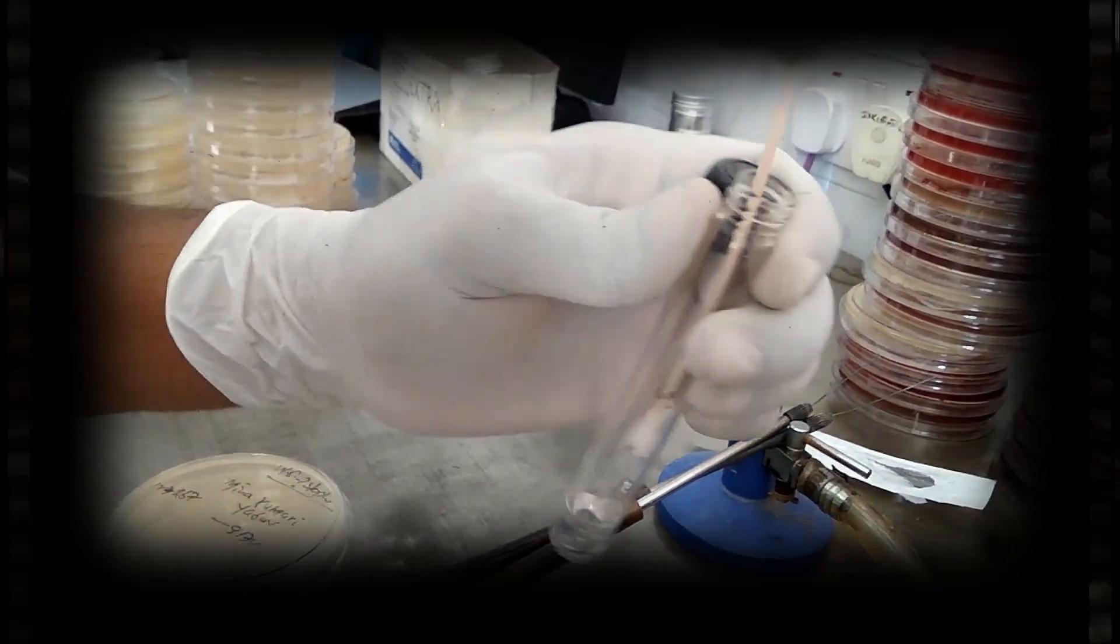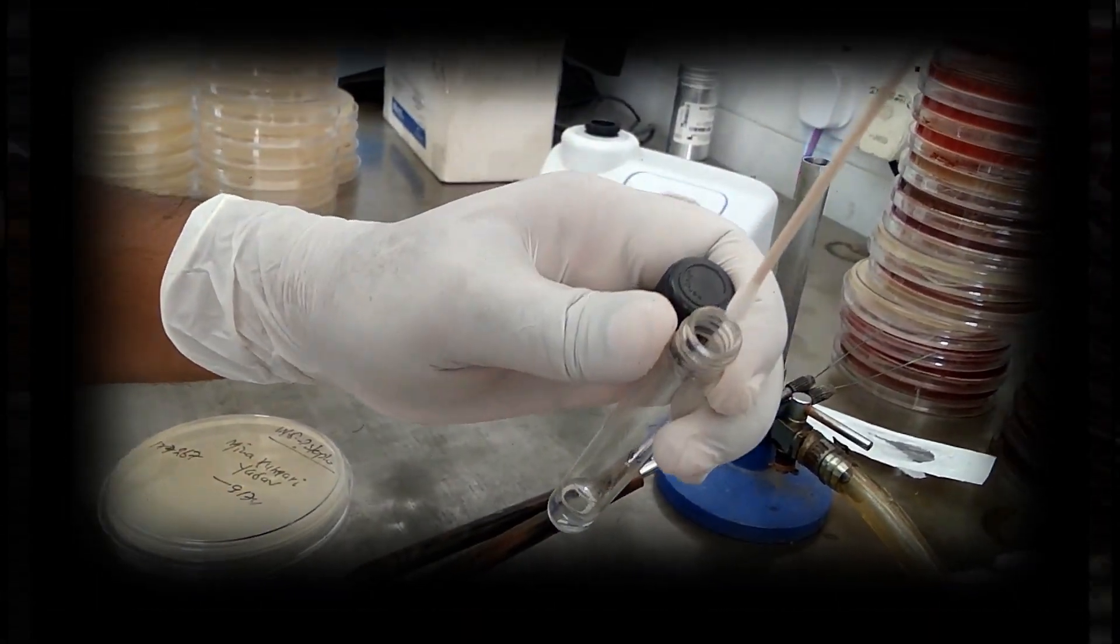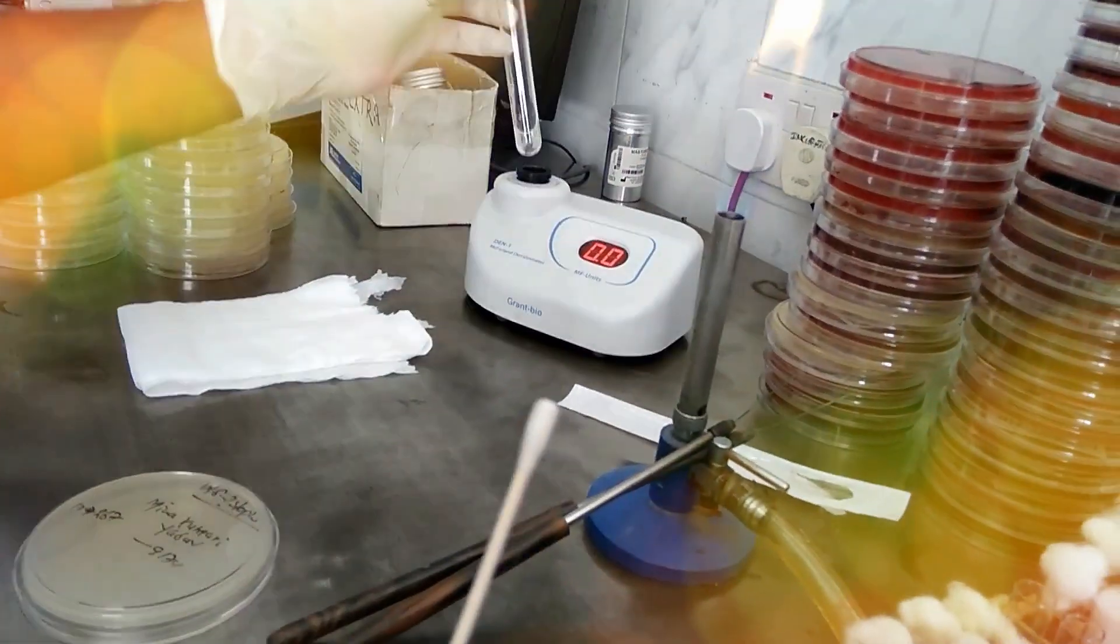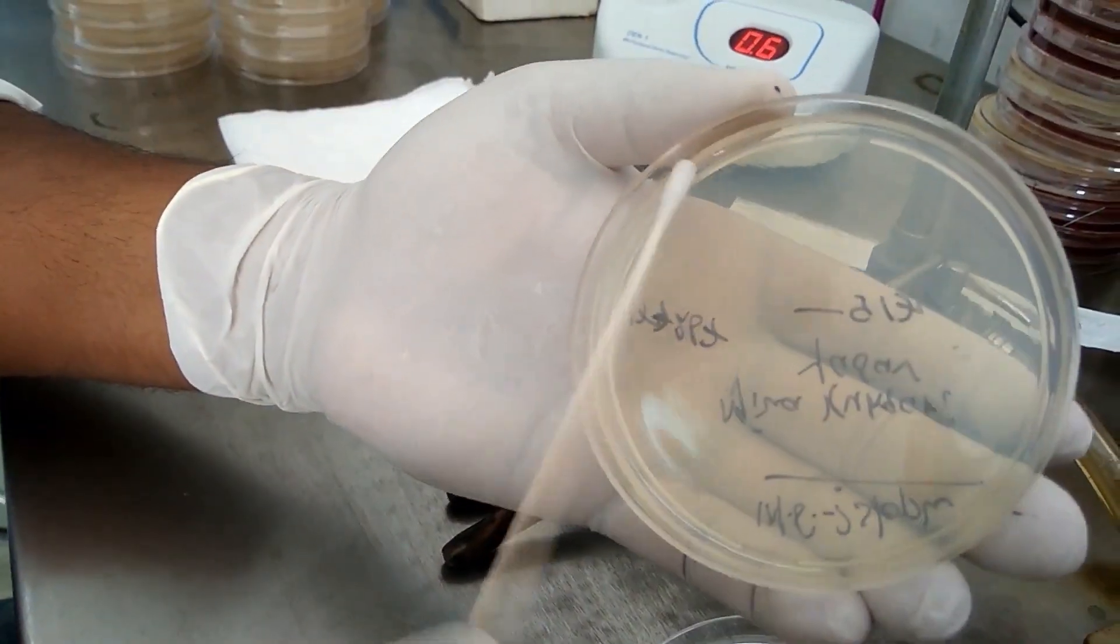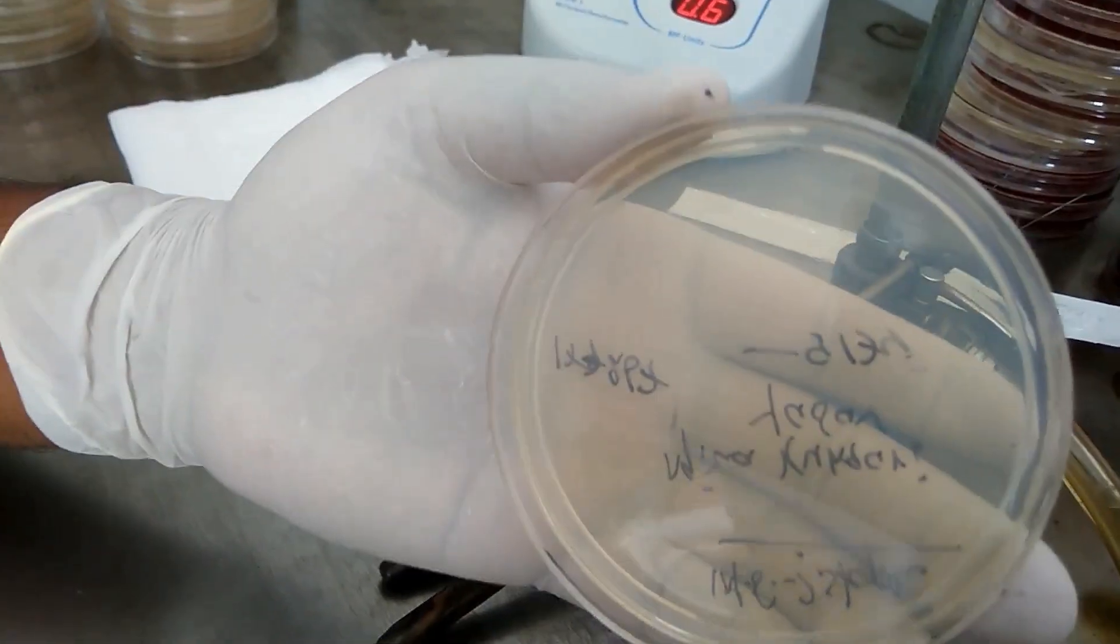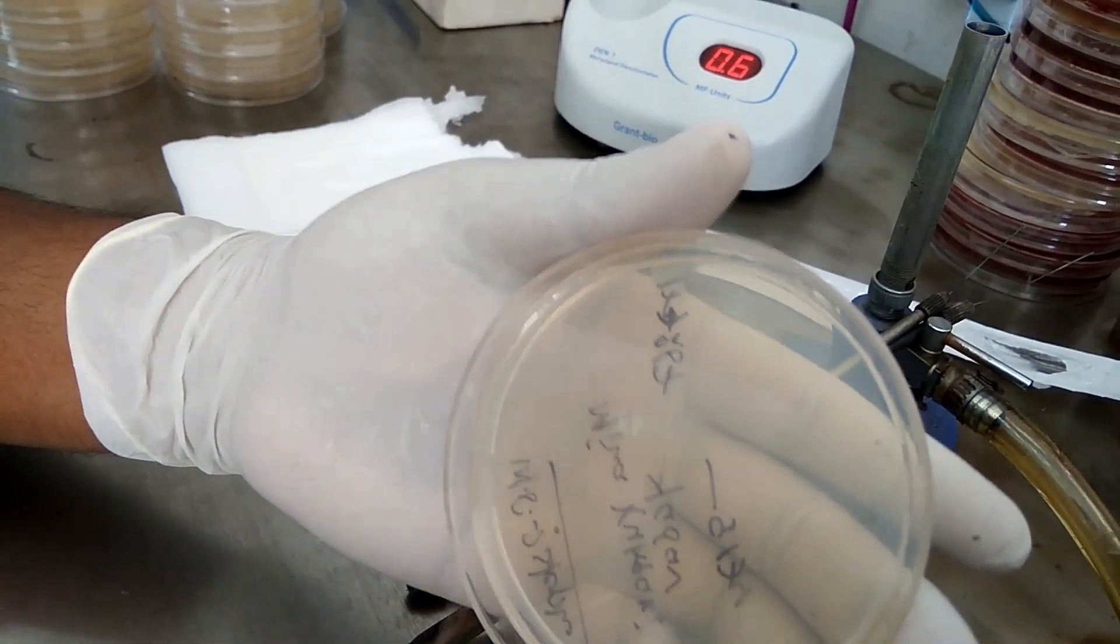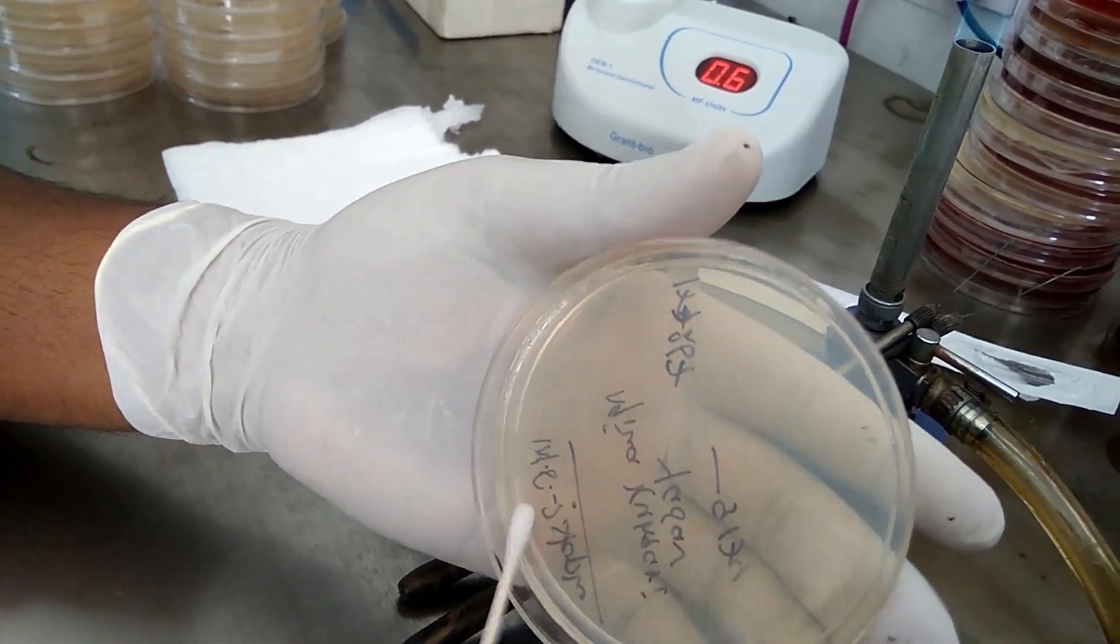Lawn cultures are obtained by flooding the surface of the plate with a liquid culture or suspensions of the bacterium. As shown here, the culture plate is kept for a minute and then excess material is poured off.